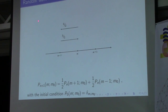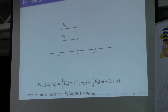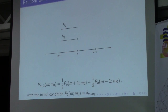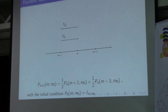Let us consider the simplest random walk model. We assume that the particle takes its steps in a system with discrete time and space variables. The particle can jump with probability one-half to the right or to the left. This process is described by this difference equation.